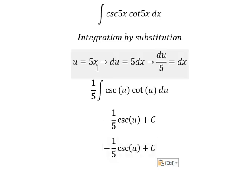Finally, we substitute back u equals 5x to get negative one-fifth csc(5x) plus C. Thank you for watching.